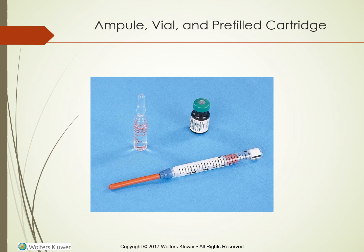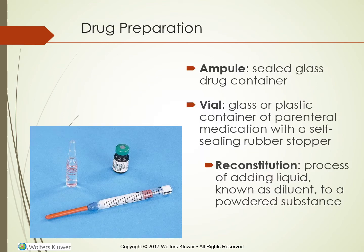Drug containers include an ampule, a vial, and a prefilled cartridge. The ampule is to the left, the vial to the right, and the prefilled cartridge is in the foreground. The ampule is a sealed glass drug container. The vial is a glass or plastic container of parenteral medication with a self-sealing rubber stopper.